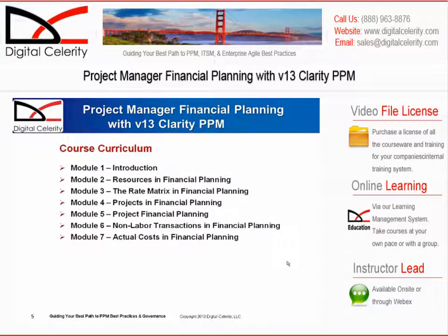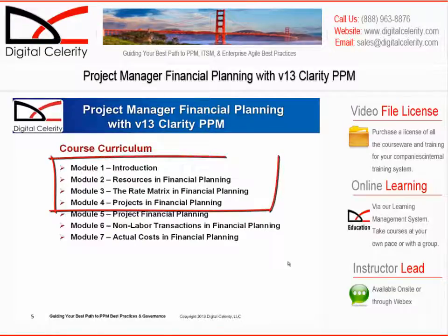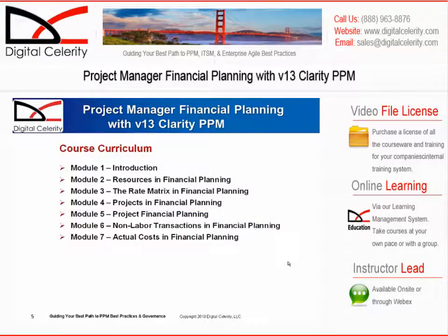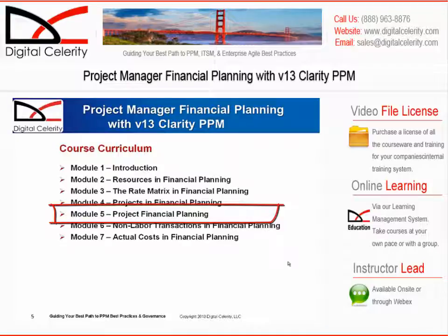Here is the outline for the course. In the first four modules, we're going to get into the fundamentals of financial planning in Clarity. We'll look at resources, labor and non-labor, how those are priced using a matrix, and what we have to do in the projects to financially enable the project. Then in module five, the key part of the course, we'll get into project financial planning. We'll go through the three financial plans: creating cost plans, budget plans, and benefit plans. In addition, we'll take a look at financial summaries, which is also called simple budgeting.